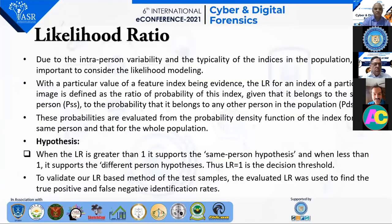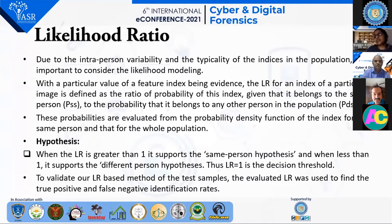On the basis of 68 facial landmarks, we calculated various indices using Python code. We introduced the likelihood ratio approach because, although many algorithms exist to detect a person from a population using deep learning, in our study, due to inter-personal variability and difficulty of indices in the population, it is important to consider the likelihood ratio modeling.